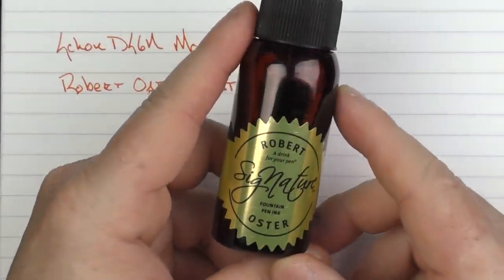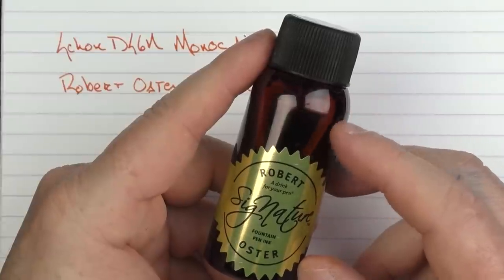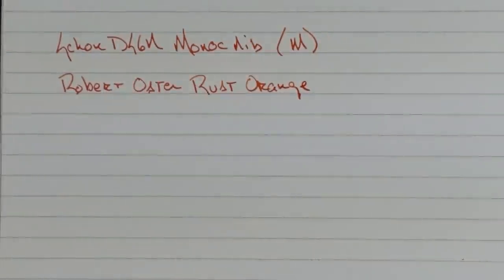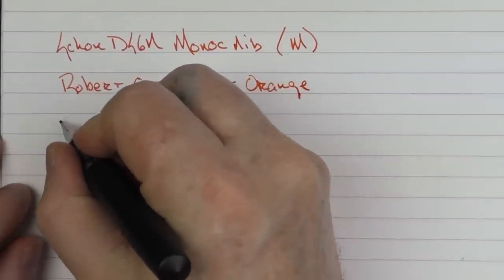This is what Robert Oster bottles look like. Like I said, this is an exclusive for Galen Leather. So you could check out their site for this particular color. It's nice. And here we go with the rest of the writing sample.